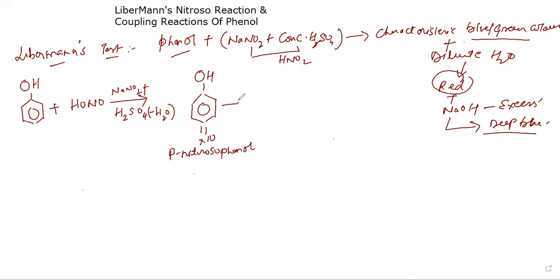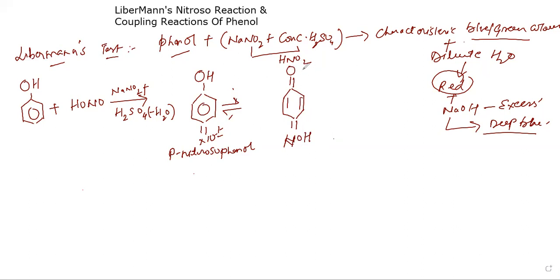p-Nitrosophenol has a mobile hydrogen, so it exists in equilibrium with a quinone-type compound. When this hydrogen moves, you get a double bond and an N-O-H group — these are called oximes. So this compound is named quinone monoxide: it's a quinone because of the double bond, and the N-O-H makes it an oxime.